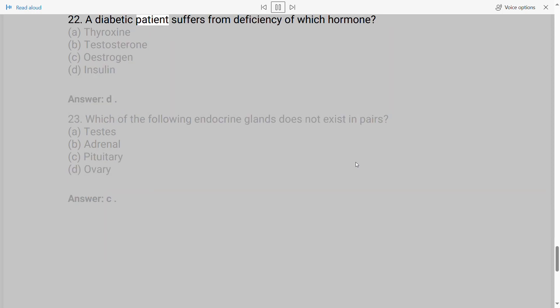22. A diabetic patient suffers from deficiency of which hormone? A. Thyroxine B. Testosterone C. Estrogen D. Insulin. Answer: D.